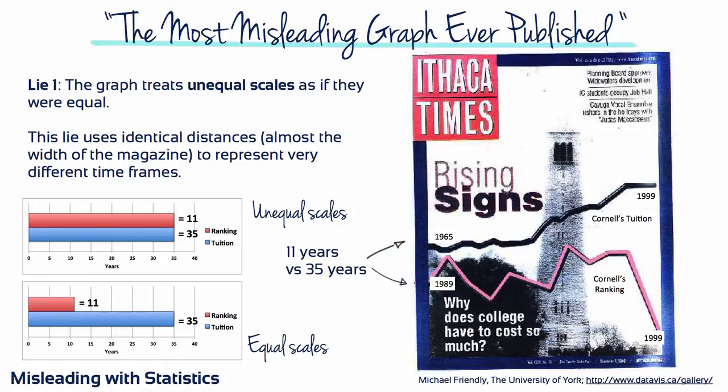The absence of critical information is a red flag. Lie number one: the graph treats unequal scales as if they were equal. This lie uses identical distances — almost the width of the magazine cover — to represent very different time frames: 11 years versus 35 years.